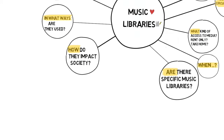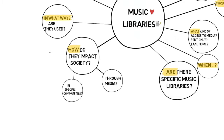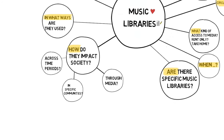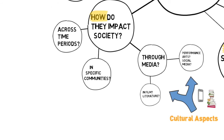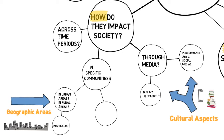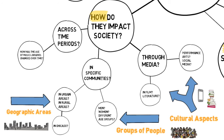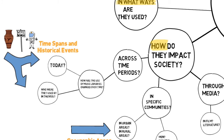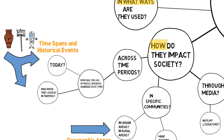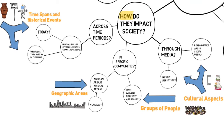Next, look for a section of your question map that looks particularly interesting to you and try adding new questions to this section. Note that you can quickly narrow your topic by focusing on themes — for example, cultural aspects, geographic areas, groups of people, and time spans or historical events. At this point, focus on asking specific questions to narrow your topic. Let your curiosity lead the way.